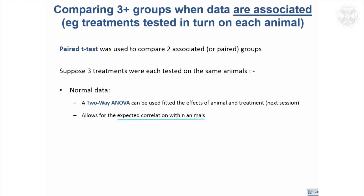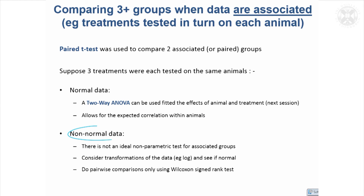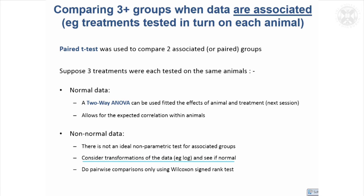A two-way ANOVA allows for the expected correlation between animals. However, if you have non-parametric data and need to work with ranks, unfortunately there's no easy way to account for association between groups. You can really only do pairwise comparisons using the Wilcoxon signed rank test. It's always important to consider transformations of the data, because if you can get it roughly normally distributed, that's a lot better and you can then use the ANOVA approach.